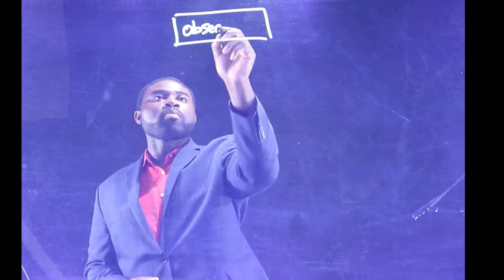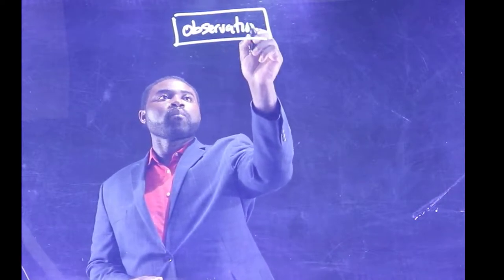Hello everybody. I'm going to give you a schematic representation of the scientific process. Remember, the scientific method is a systematic approach through which scientists build reliable information or knowledge. It begins with observation of the natural world. So we have here: observations.